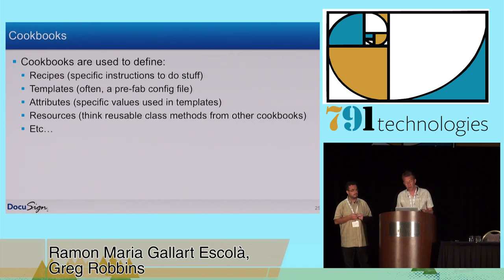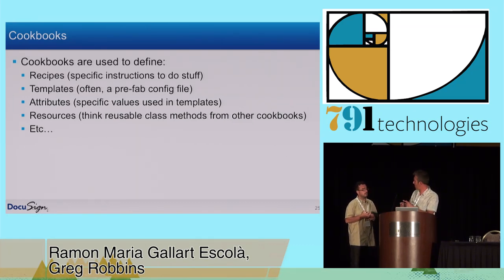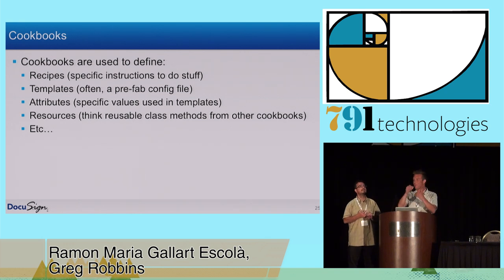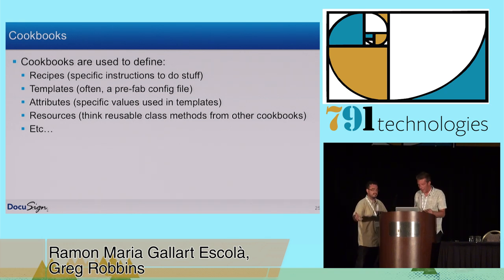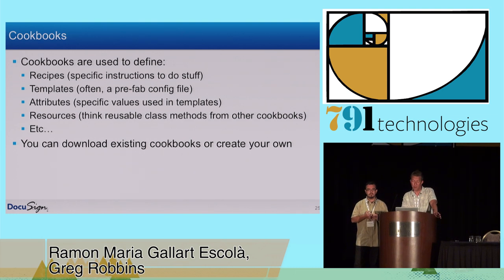There's also the concept of resources — they're like reusable class methods from other cookbooks, dependencies. When you see in our code where we set up PostgreSQL, it requires the Python cookbook in order to set up some of the dependencies, to create a user for the database, for example. This is kind of what cookbooks do. And once again, you can download existing cookbooks from the supermarket or from GitHub — you'll probably find a lot of them — or you can create your own.